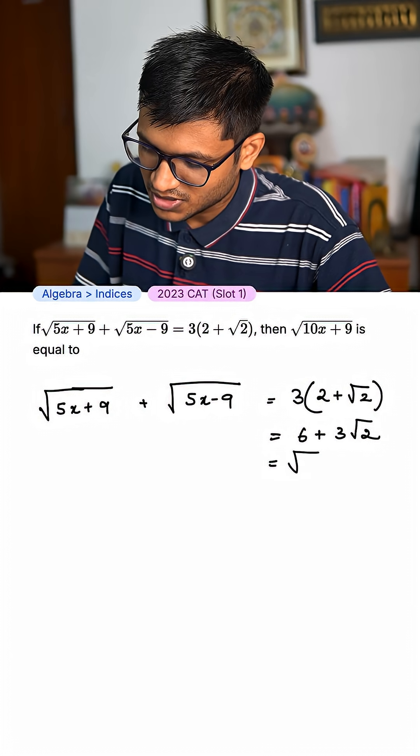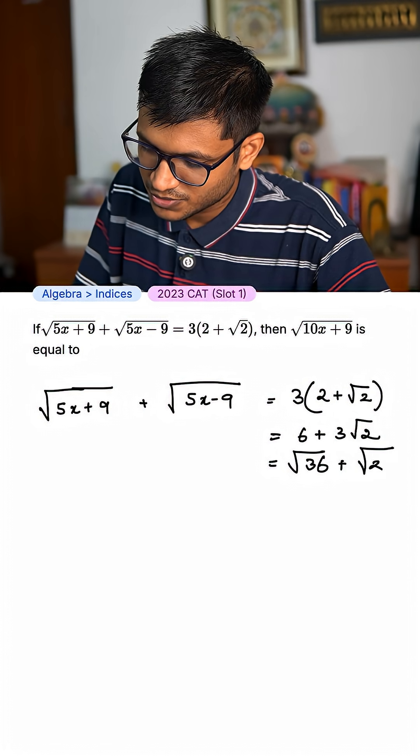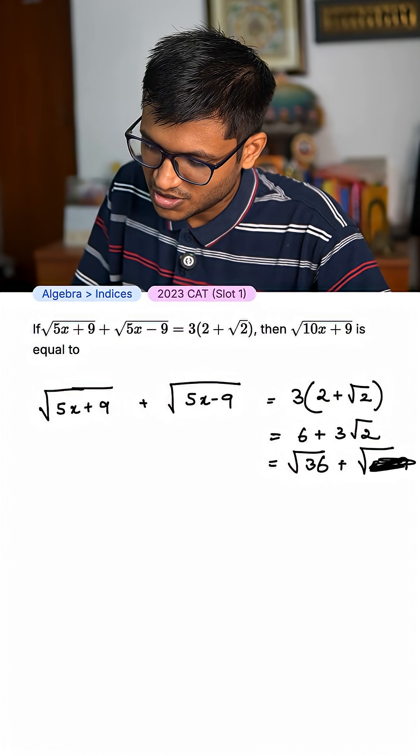6 is √36. And this can be said to be √(2×9), which is nothing but √18.